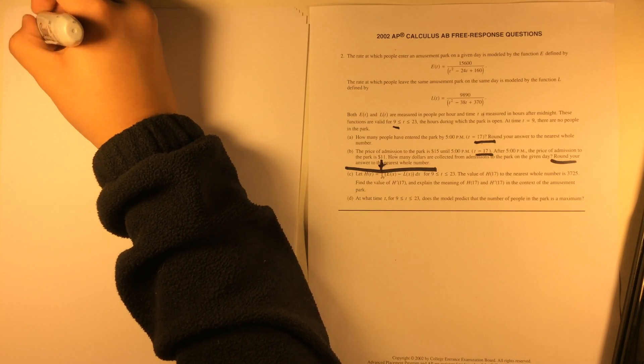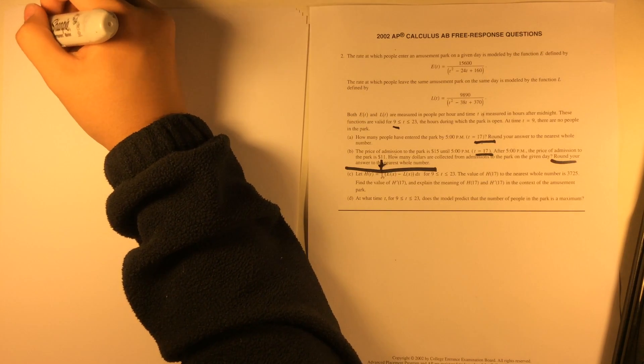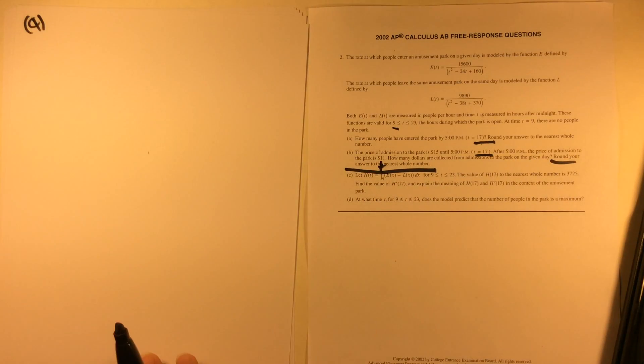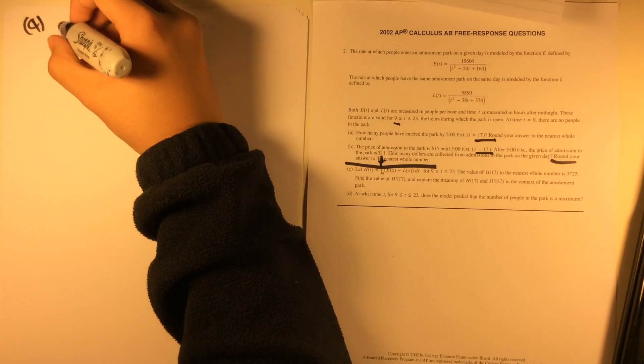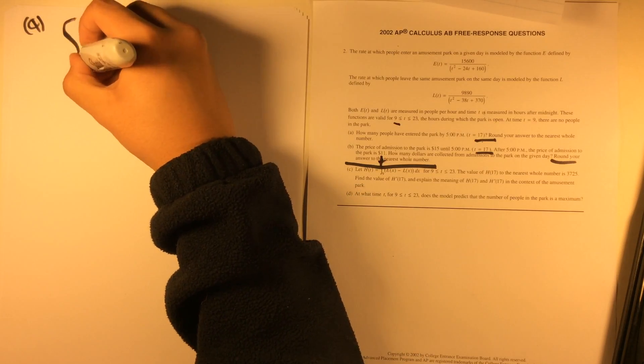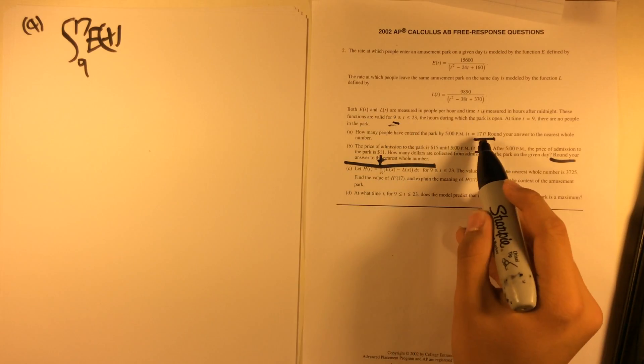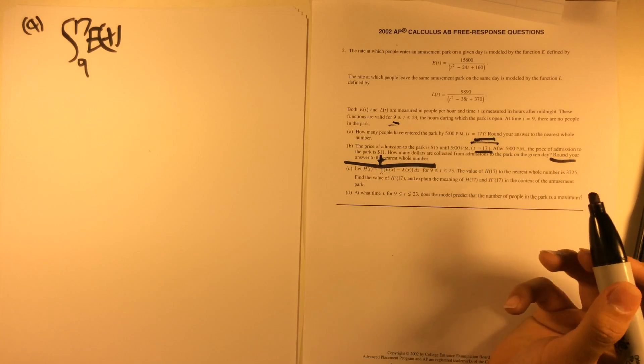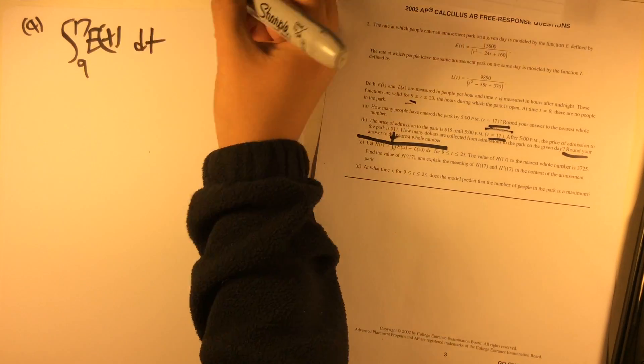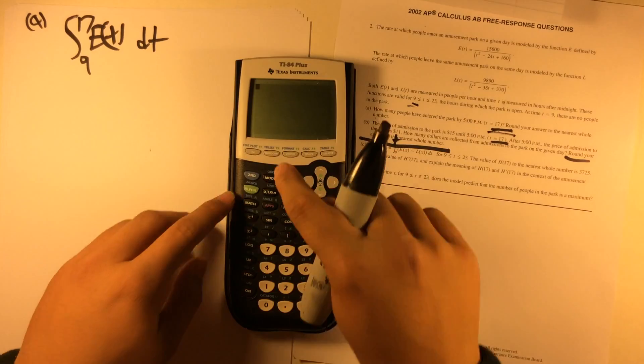For Question A, how many people are in the park by 5pm, T equals 17? You answer to the nearest whole number. It is simply a integral. This is a rate, so all you need to do is an integral to get the number of people, so integral of E(T) from 9 to 17. This is pretty straightforward, you're just punching into your graphing calculator.